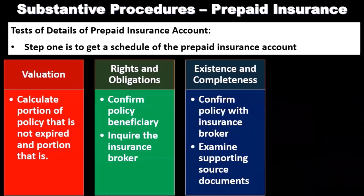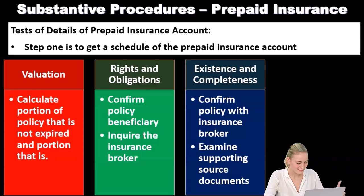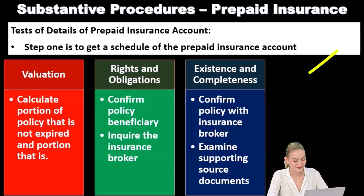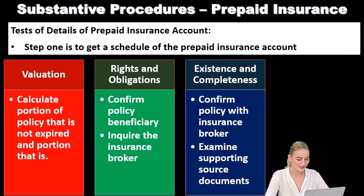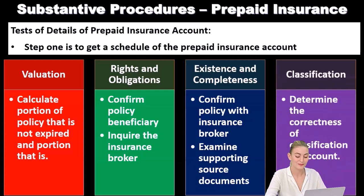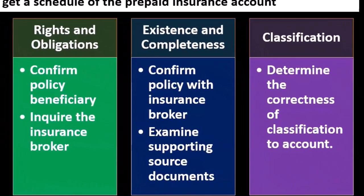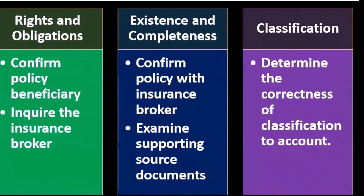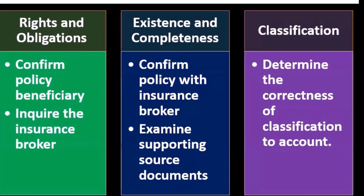For the assertion of existence and completeness, confirm the policy with the insurance broker — again, talking to someone outside the company provides a bit more assurance. We should also examine supporting source documents. Finally, for the classification assertion, we determine the correctness of classifications to accounts, making sure that amounts are being properly classified to the appropriate accounts.